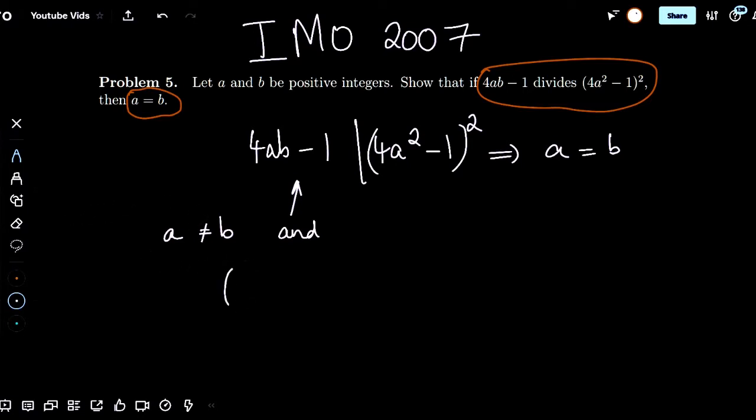For clarity, I'm going to define x, y to be a good pair, for lack of a better word, if 4xy minus 1 divides 4x squared minus 1 whole squared.